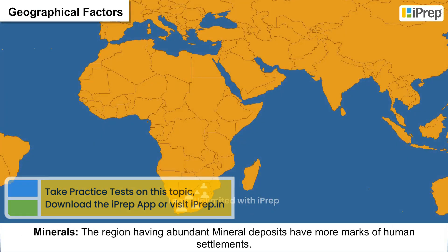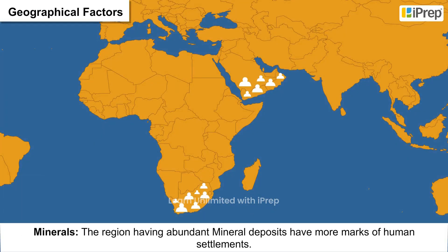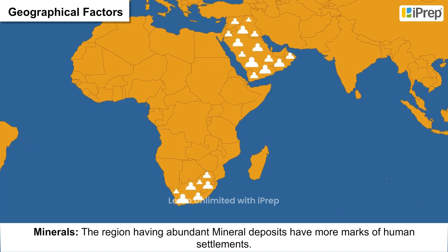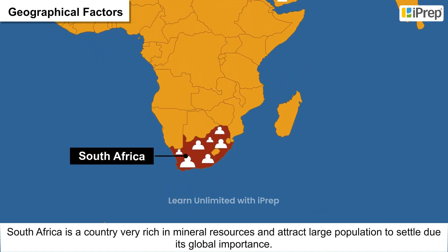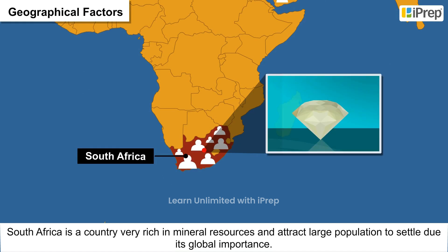Minerals: Regions having abundant mineral deposits have more marks of human settlements. Example: South Africa is a country very rich in mineral resources and attracts a large population to settle due to its global importance.